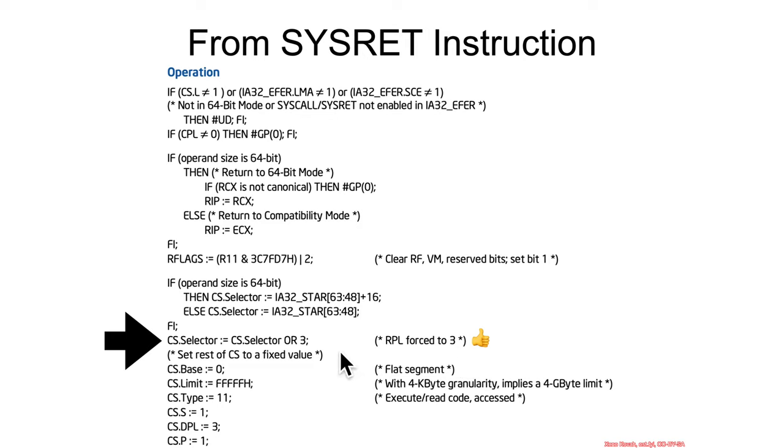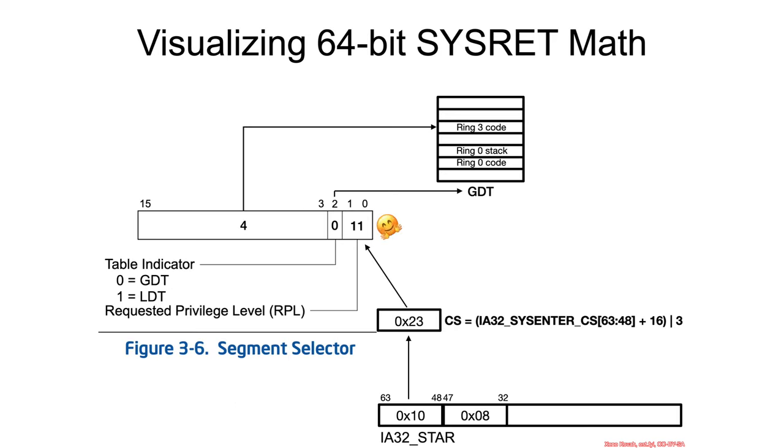And again, that's just another one of these consequences of rings 1 and 2 never really being used. They just decided to say, you know what, screw it, we're not going to make this generic for every single privilege ring transition. We're just going to assume people are using ring 0 and ring 3. And likewise, a bunch of hard-coded values get set into the hidden portion, the cache portion, of the CS segment register, including the DPL being set to a hard-coded 3.